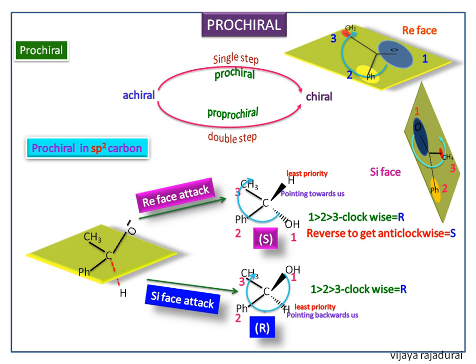Re-face attack will give the S product if the incoming nucleophile is the least priority group. Si-face attack will give the R product if the incoming nucleophile is the least priority group.